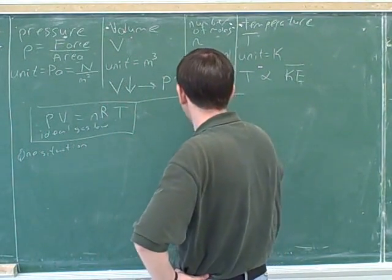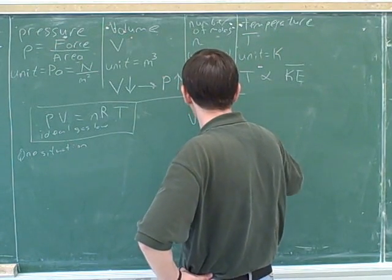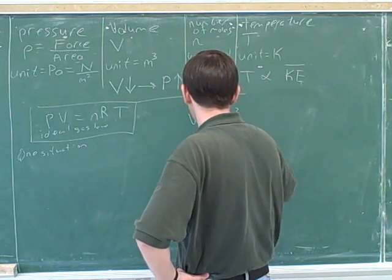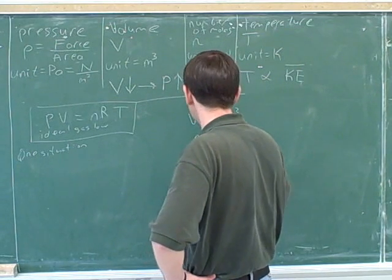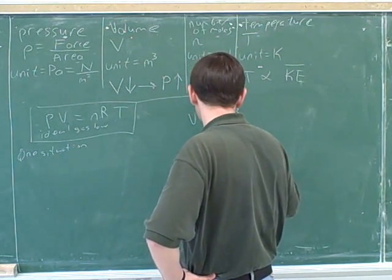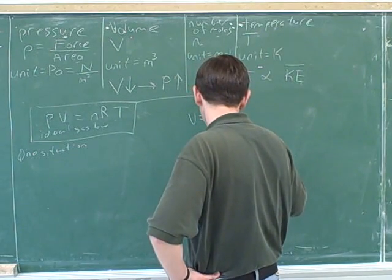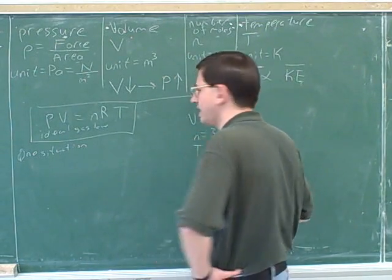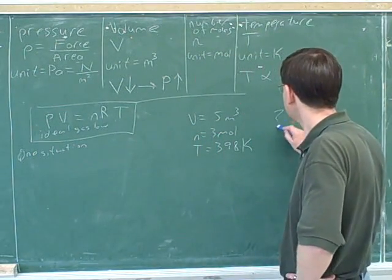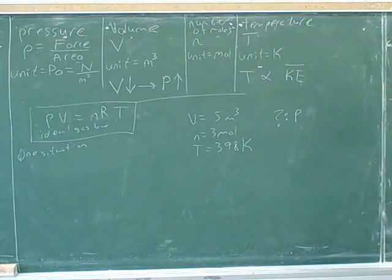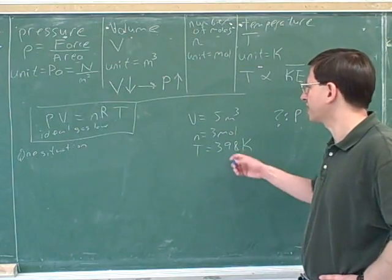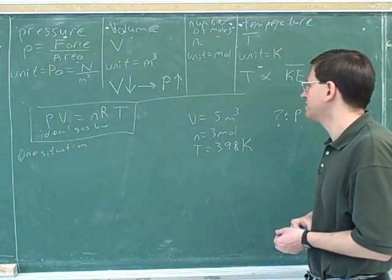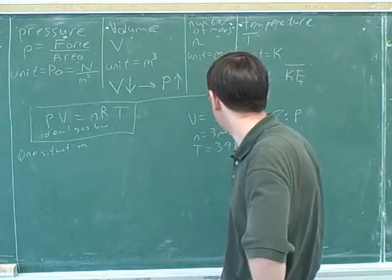For example, suppose I tell you that the volume is 5 cubic meters and N is 3 moles and the temperature is 398 Kelvin. And I ask you for the pressure. Well, this should be straightforward enough that maybe we won't actually work through this. But the point here is you would just plug into the formula. Everything's already in standard units. You'd have to do a little bit of algebra because you'd have to get the P by itself in the formula. But you just plug in.